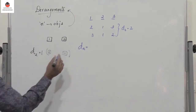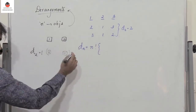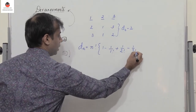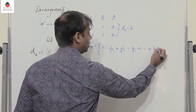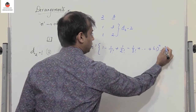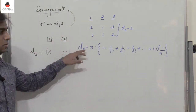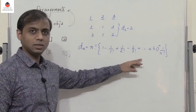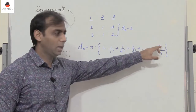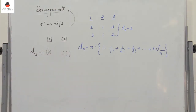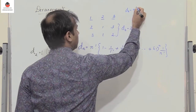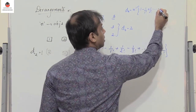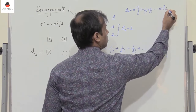The formula is: Dn equals n factorial into (1 minus 1 by 1 factorial plus 1 by 2 factorial minus 1 by 3 factorial, and finally plus or minus 1 whole power n times 1 by n factorial). The sign keeps alternating, and finally you have (−1)^n times 1 by n factorial. This is the formula to remember.